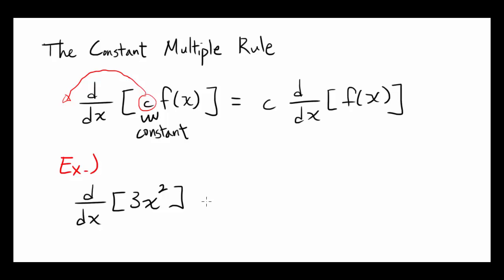So what you can do in this case, you can get the 3 out of the way. So it's going to be 3 times the derivative with respect to x of x², which we know from the power rule is 2x, and 3 times 2x is going to be 6x.